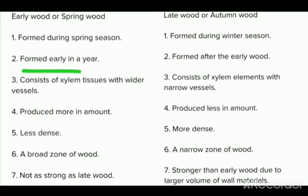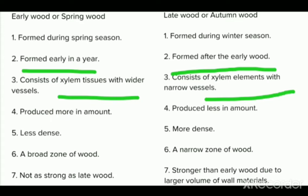Early wood structure forms early in the year and late wood structure forms after the early wood. Third point: early wood consists of xylem tissue with wider vessels, and late wood consists of xylem elements with narrow vessels. In the spring season, temperate region plants show more activity — they require more water and more food, so xylem tissue has wider vessels. In the autumn season, plants show less activity and their vessels and tissues are less active, so the late wood xylem elements have narrow vessels.